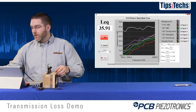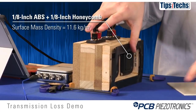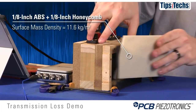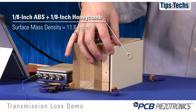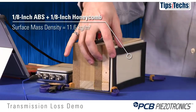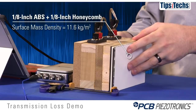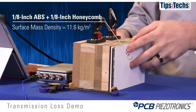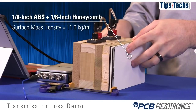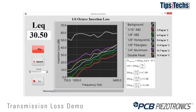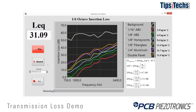Finally, I'm going to demonstrate a double-panel system. We'll use the 1/8-inch honeycomb and the 1/8-inch ABS with a 1/8-inch air gap between the two of them. This panel system weighs about 11.6 kg per meter squared surface mass density — about the same as the 1/8-inch fiberglass. The single-panel mass law would tell us this should have the same insertion loss. You can see we get considerably better insertion loss with the double-panel system, and that's because of the air gap.